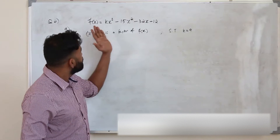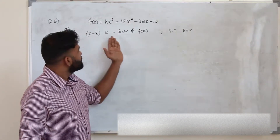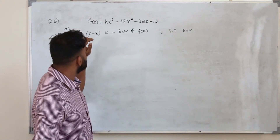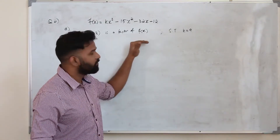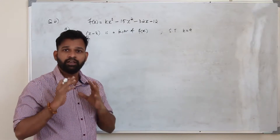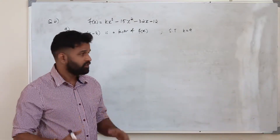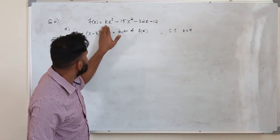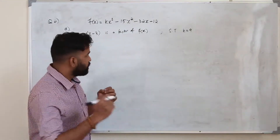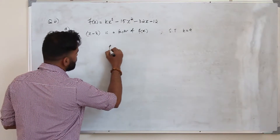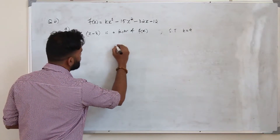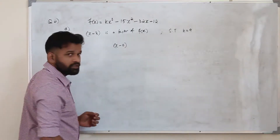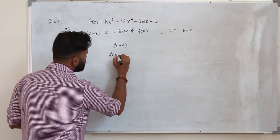You are given a function f of x and x minus 3 is a factor of f of x. The moment you see that x minus 3 is a factor, you need to apply the factor theorem — not the long division method. They want you to prove that the constant k is 9. The factor theorem says: if x minus a is a factor of f of x, then f of a equals 0.